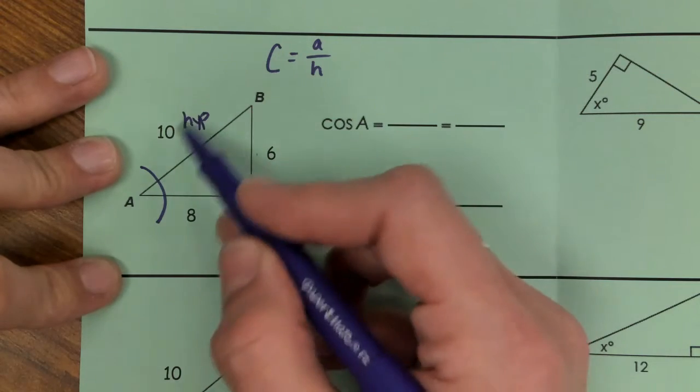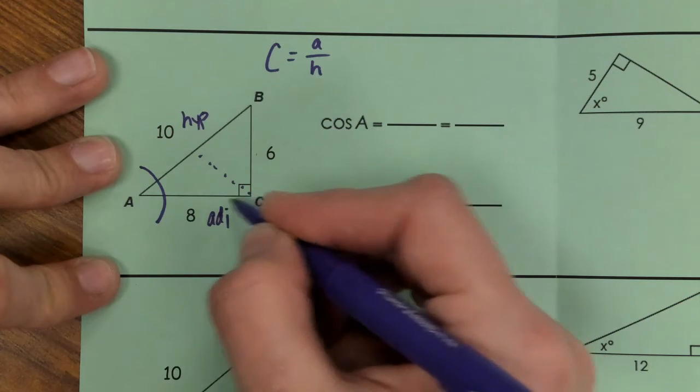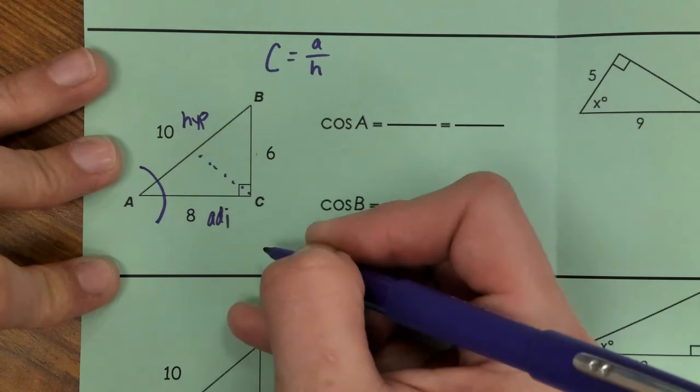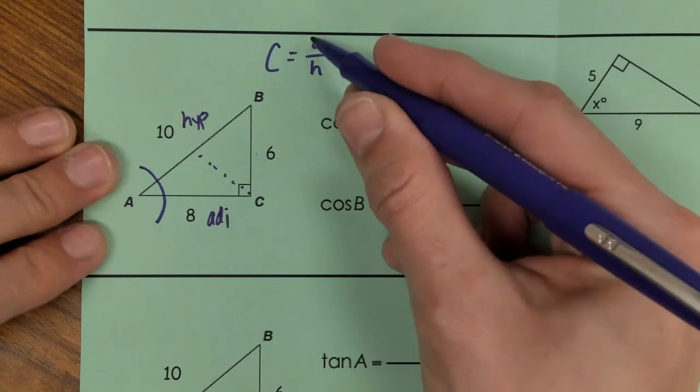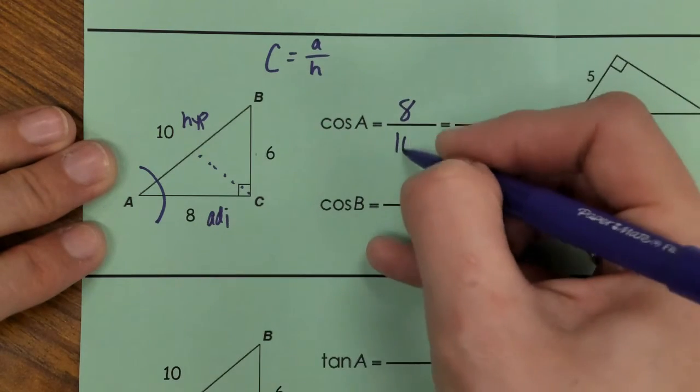So we don't accidentally say that is our adjacent. This will be our adjacent because it's one of our legs that creates the 90 degree angle. So adjacent of 8 over hypotenuse of 10, this will simplify to 4 fifths.